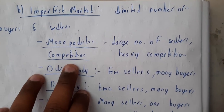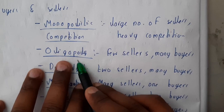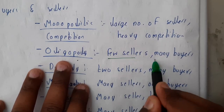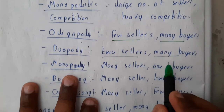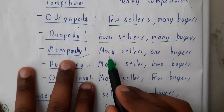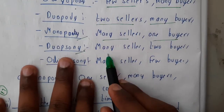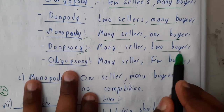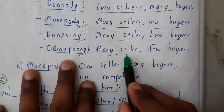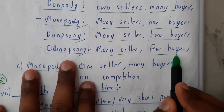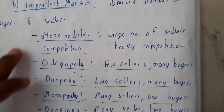In monopolistic there is heavy competition. After that, oligopoly means a few sellers and many buyers. Duopoly means two sellers and many buyers. Monopoly means many sellers and one buyer. Duopsony means many sellers and two buyers. Oligosony means many sellers and few buyers. These are all the imperfect markets.